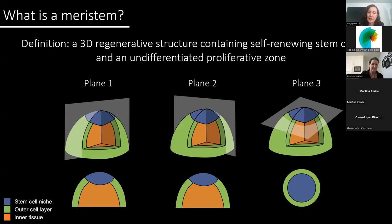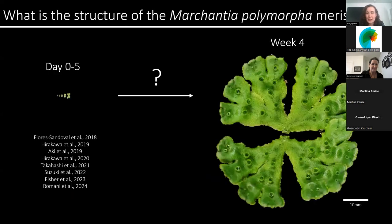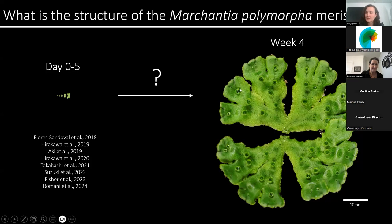We know a lot about how the meristem is regulated in flowering plants, but we know much less about meristem regulation in other lineages, such as the bryophytes. And Marcantia polymorphia is a bryophyte that's being increasingly used to understand plant development. There have been some really great papers in recent years that have identified the genetic regulators of meristems in the early stages of Marcantia growth. However, we don't know much about the three-dimensional structure of the meristems at these early stages, or how these structures compare to the meristems of the mature plant.